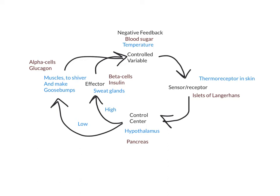And that's how basic negative feedback works. Your controlled variable is what you're trying to control. Your sensor or receptor picks up the information and sends it to the control center, which makes the decisions about what will happen. Then the effectors are the parts of the body that make a change. Every time you encounter a negative feedback situation, you should always look at a negative feedback loop to determine what should be happening and if that item is being controlled properly.